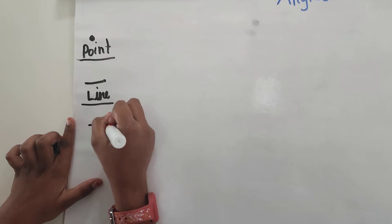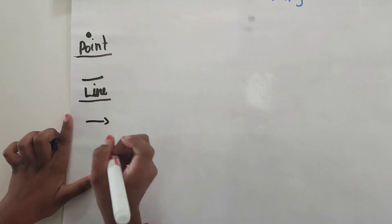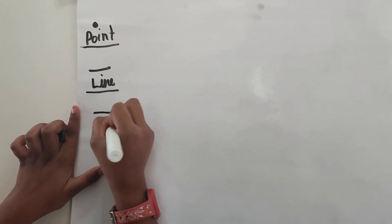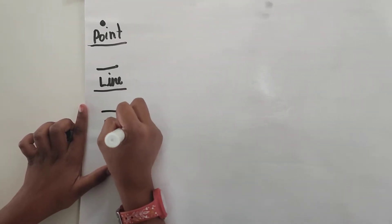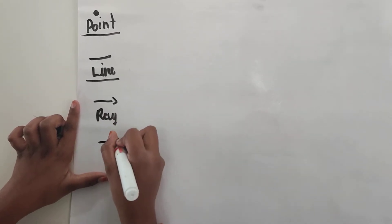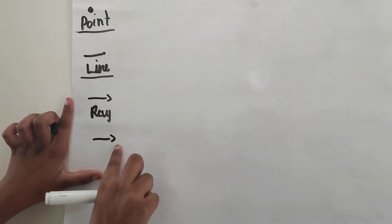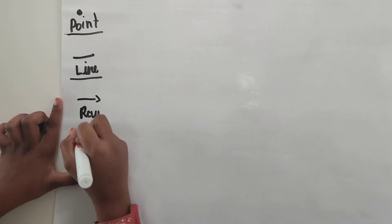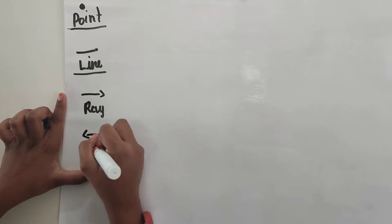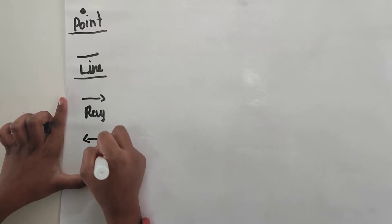Now, I am keeping the arrow mark here, so this is known as a ray. Next, I am also keeping this at another side, so it is a line segment.